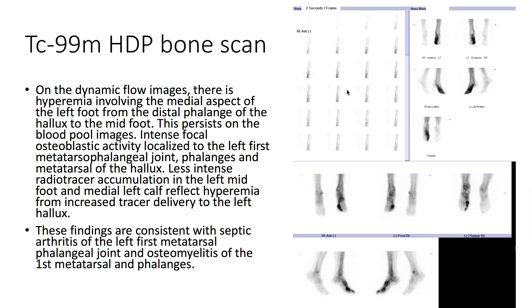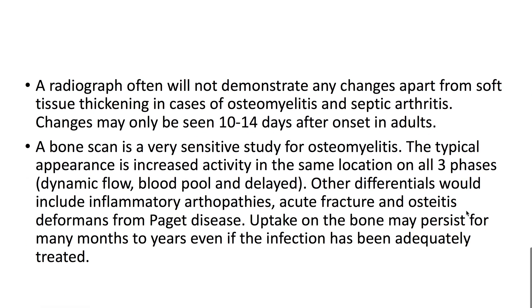On technetium-99 HDP bone scan, the dynamic flow images show hyperemia involving the medial aspect of the left foot from the distal phalanx of the hallux to the midfoot. This persists on the blood pool images. Additionally, there is intense focal osteoblastic activity localized to the left first metatarsophalangeal joint, phalanges, and the metatarsal of the hallux.